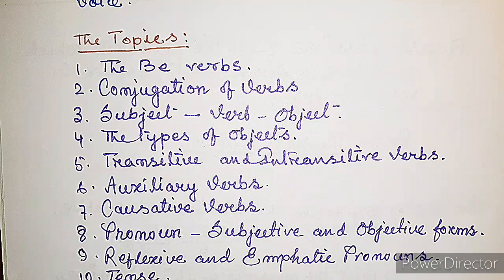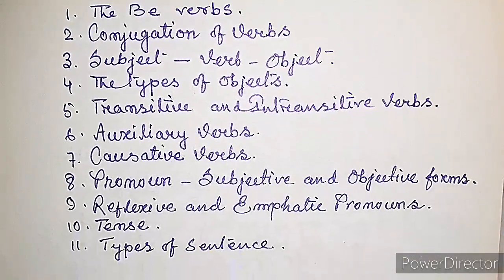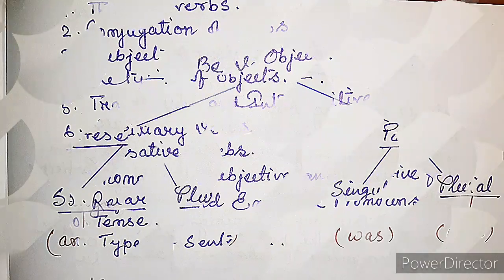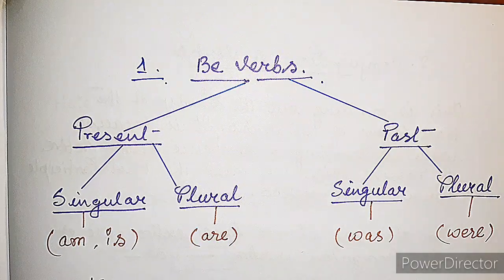Number five, transitive and intransitive verbs — this is perhaps the most important topic. Number six, auxiliary verbs. Number seven, causative verbs. Number eight, pronouns — subjective and objective forms. Number nine, reflexive and emphatic pronouns. Number ten, the tense. And number eleven, the types of sentences.